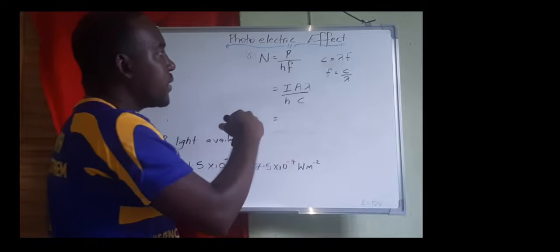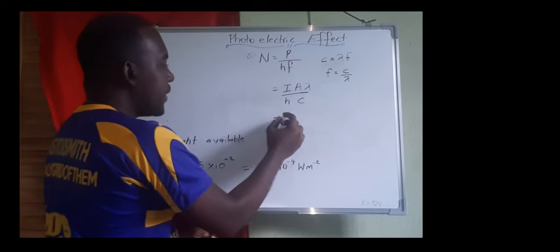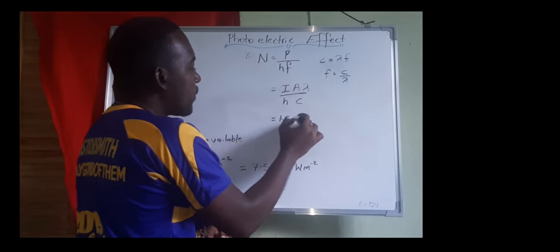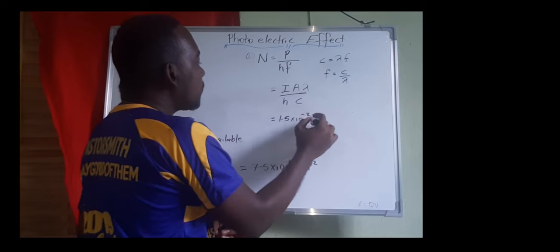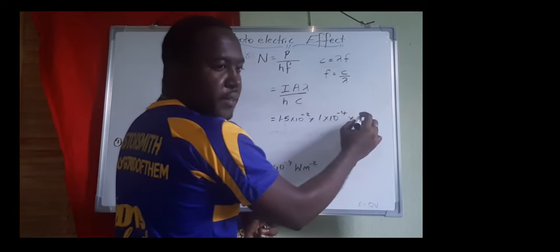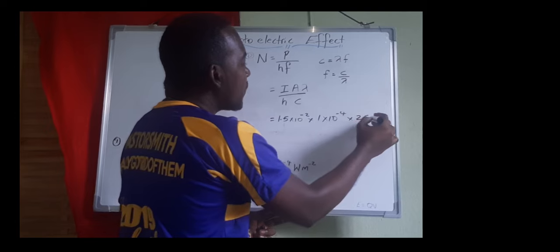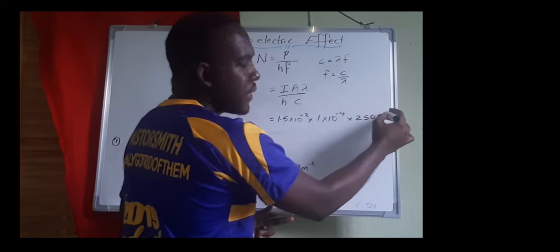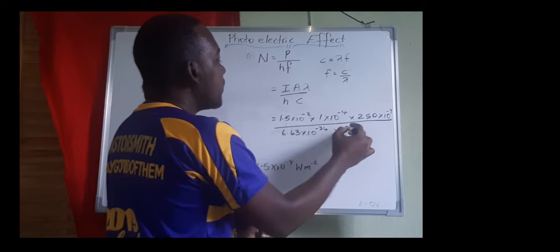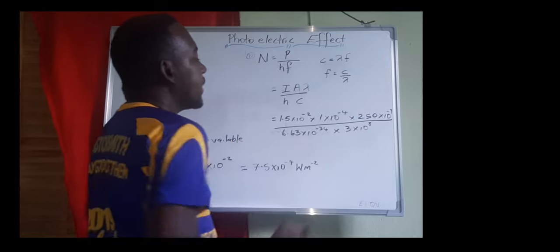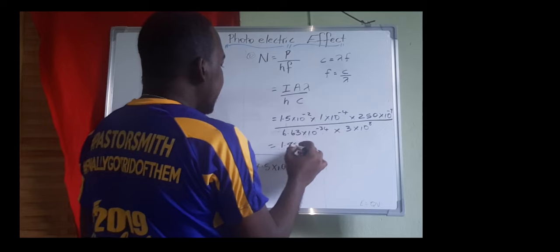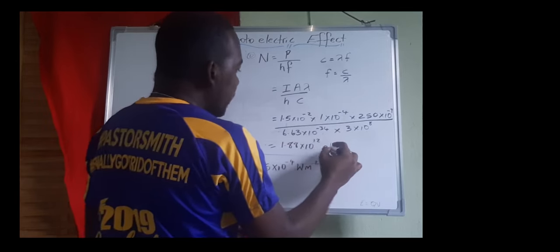Substituting values: intensity = 1.5 × 10⁻² W/m², area = 1 × 10⁻⁴ m², λ = 250 × 10⁻⁹ m, Planck's constant h = 6.63 × 10⁻³⁴ J·s, and speed of light c = 3 × 10⁸ m/s. Calculating all of that gives 1.88 × 10¹² electrons per second.